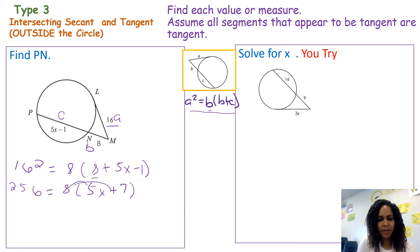Distributive property, bringing down 256 equals 40x plus 56. I'm going to subtract 56 from both sides. This is a basic two-step equation. Subtracting 56 from both sides, I get 200 equals 40x, dividing by 40. 200 divided by 40 is 5, so x equals 5.